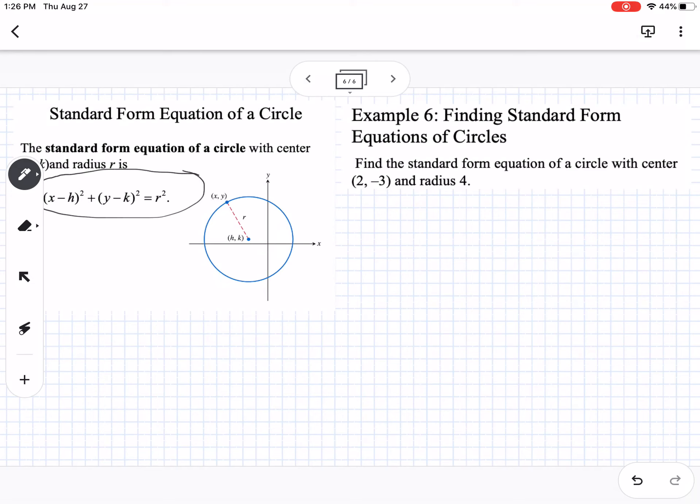So if you look over here at our example, we have a center of two, negative three. So h is two, k is negative three, and our radius, r, is four. So you're literally just taking those numbers and plugging them into the formula.